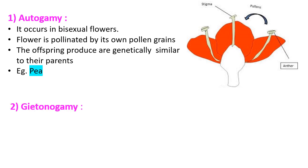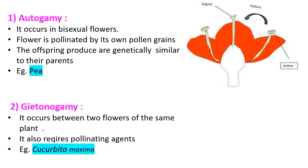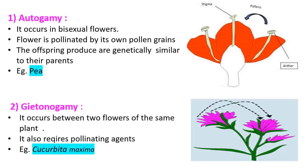The second type of pollination is geitonogamy. 'Geiton' means neighbor. Geitonogamy is a type of pollination in which pollen grains are transferred from the anther of one flower to the stigma of another flower present on the same plant. Pollinating agents are also required for this process. The common example of geitonogamy is Cucurbita maxima.